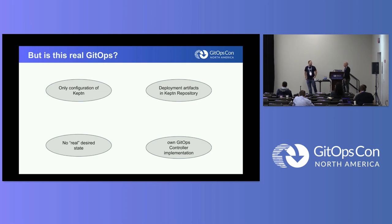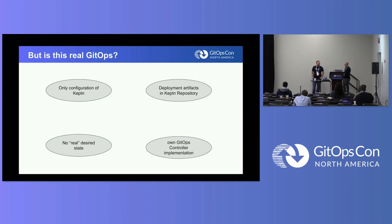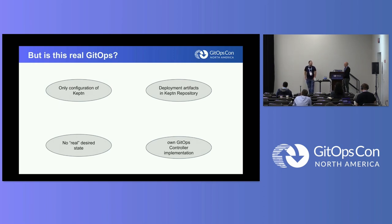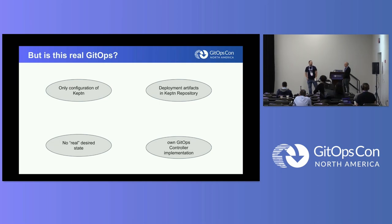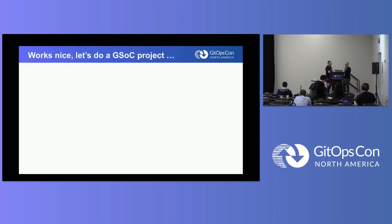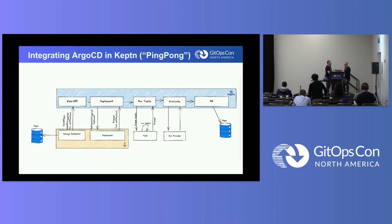Furthermore, we had our own artifacts in an own Keptn repository. For deployments, we had no real desired state — we copied and modified configuration but it wasn't a true desired state. And last, the hardest part: we didn't use Argo or Flux; we implemented our own git and GitHub controller, which was hard for everyone who wanted to use it.